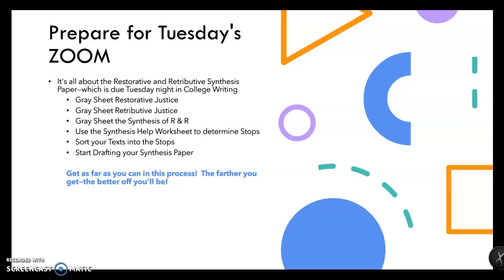Then you're going to prepare for Tuesday's Zoom class. In addition to finishing Just Mercy, there are other things to do. It's all about the restorative and retributive synthesis paper, and that's due Tuesday night in college writing. That's why you want to get as far as you can on this process so that Tuesday in Zoom you are pretty far along. You're going to want to do a gray sheet on restorative justice, a gray sheet on retributive justice, a gray sheet synthesizing retributive and restorative justice, and then use the synthesis help worksheet in college writing to determine the stops.